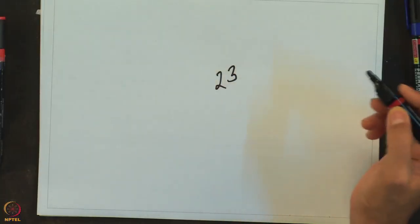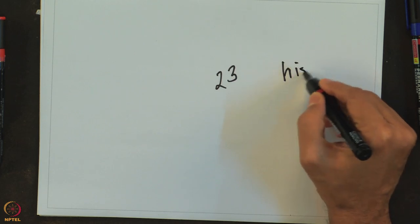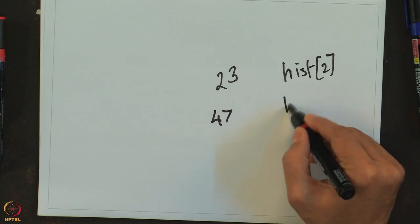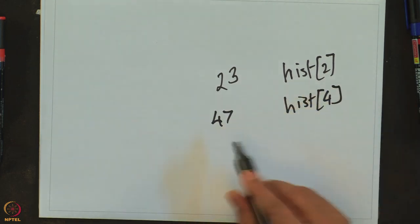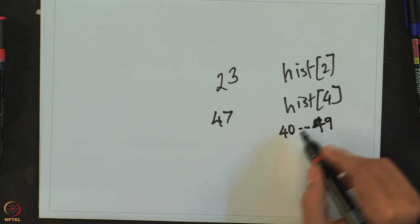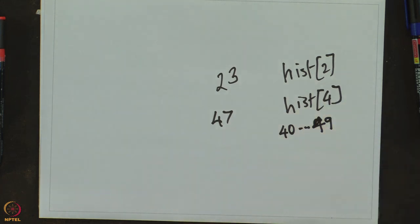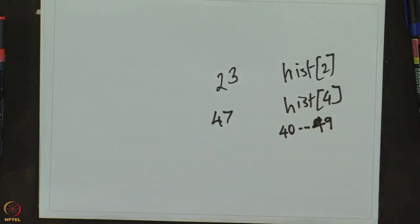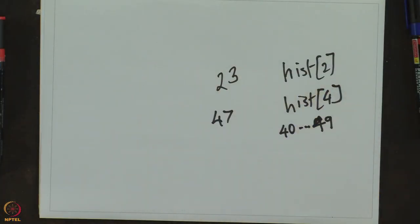In fact, the number obtained by dropping the least significant digit gives you the index of the element of hist that you are supposed to increment. For example, if I get 23, then I should increment hist[2]. If I get 47, I should increment hist[4], because 47 lies in the range 40 through 49, and that is what is stored in hist[4].